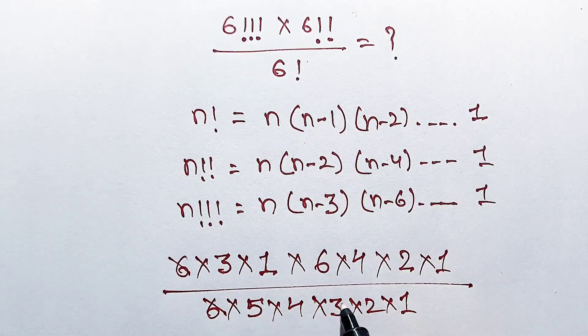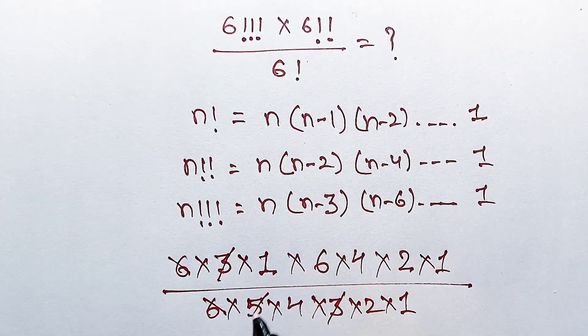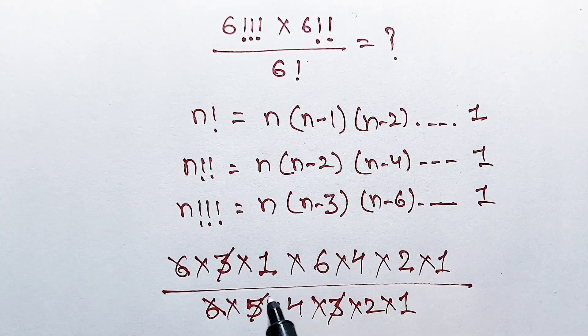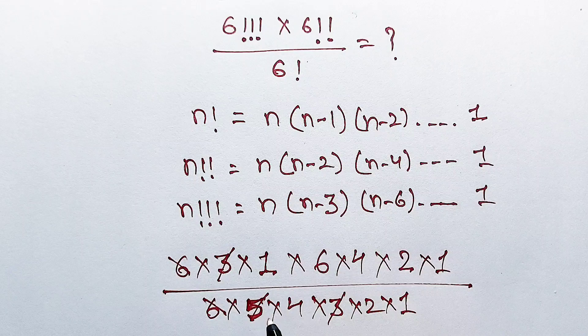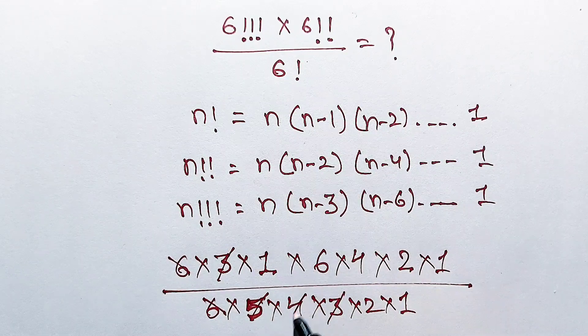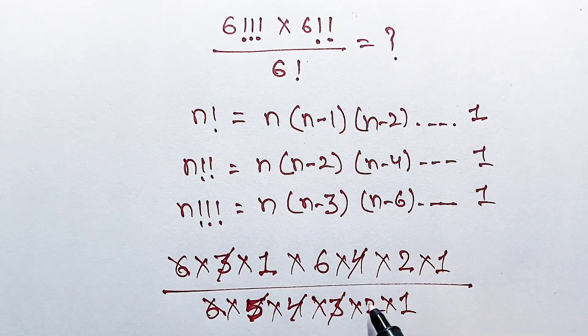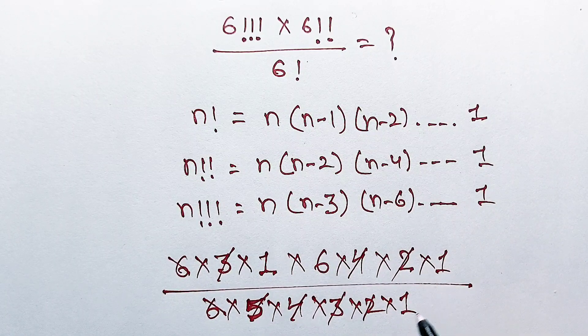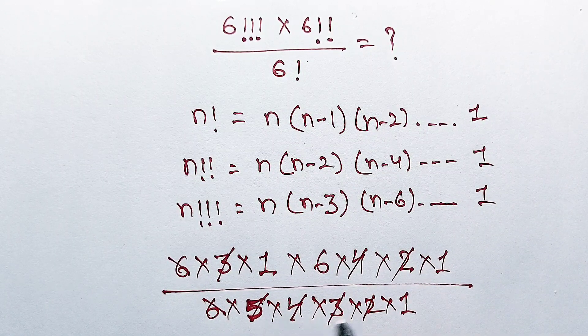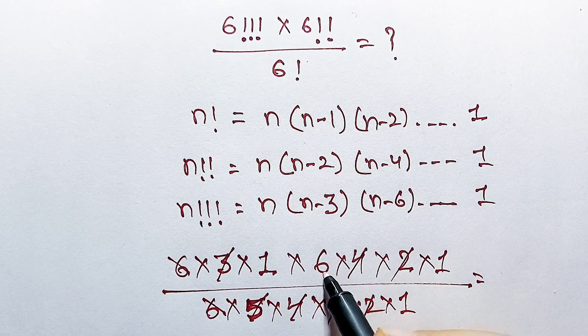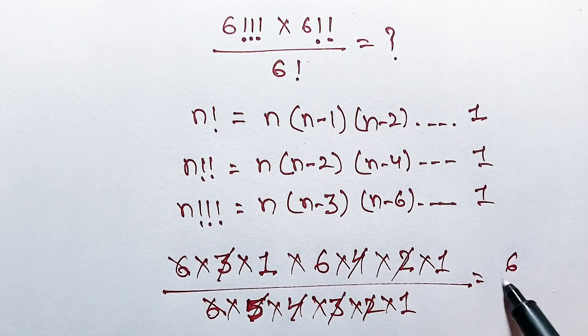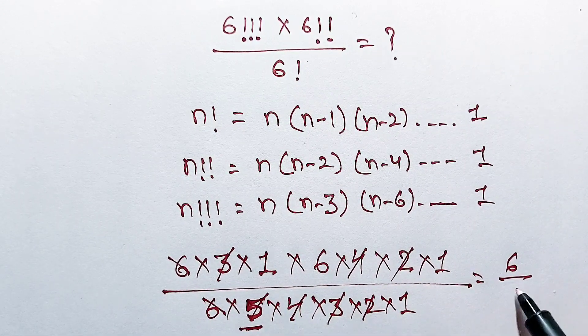3 cancels out 3. 5, 5 is not available here so 5 will remain 5. 4 divides by 4, 2 divides by 2. Almost all terms cancel out, so here 6 is left and here is 5 left.